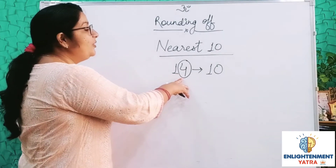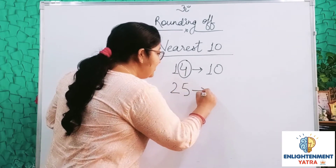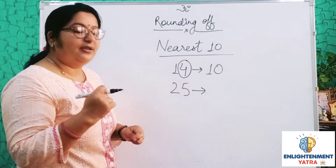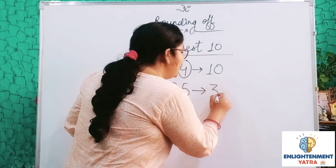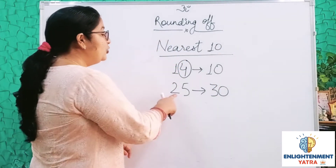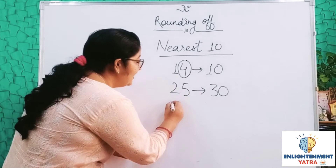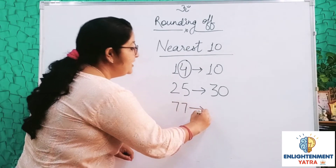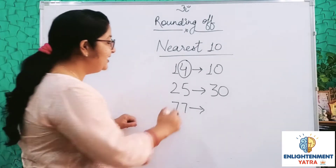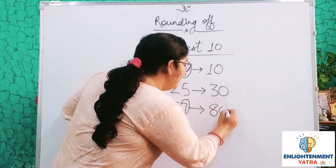Second question hai jisme 25 hai. Aapko 25 ko nearest ten pe round off karna hai. Toh aap kya karenge? Answer aayega 30. Kyunki five ya five se zyada agar number hoga, toh hum uski jo next digit hogi usse higher digit pe le jayenge — that is 30. Similarly agar aapke paas 77 hai. 77 ke case mein, you will see this one's digit is higher than 5, so the answer will be 80.